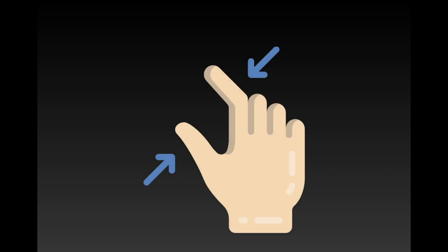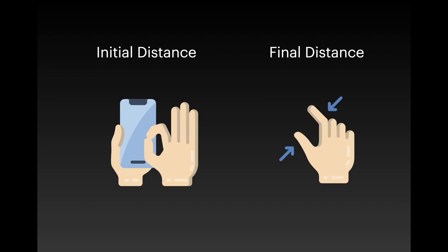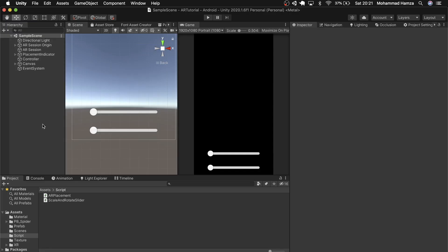Just to give you a snapshot of what we will do in code: we will take the first touch, call it Touch 0, and the next touch, Touch 1. We then calculate the initial distance between the two touches and then the final distance between the two touches, then use the ratio of these two distances as a factor and multiply it to the existing scale of the game object.